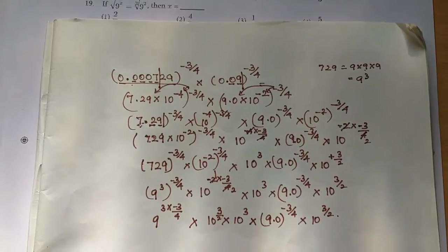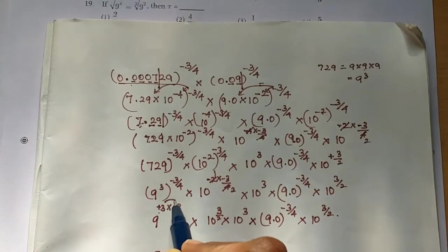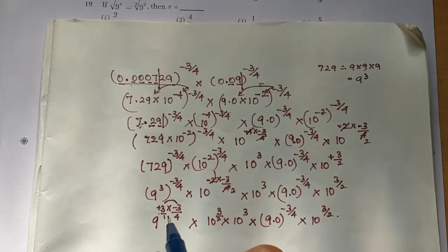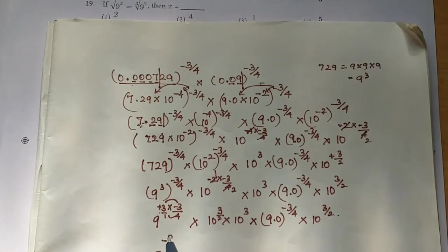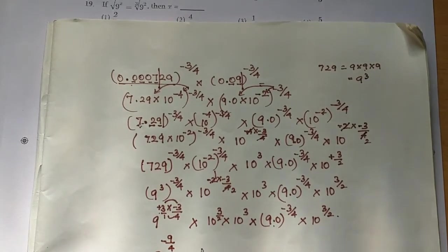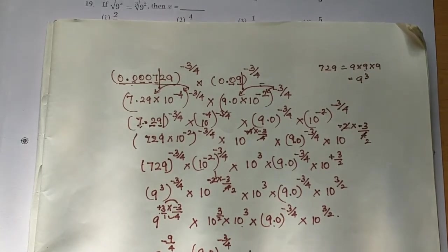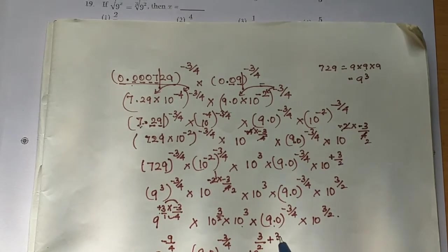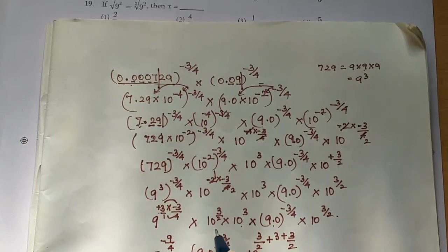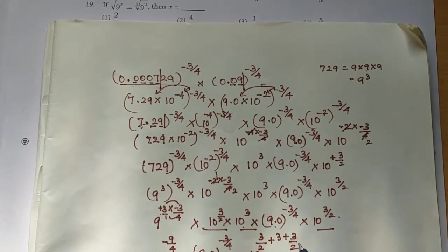So if you look at 9 power — this is multiplication, numerator into numerator. By 1 is there, denominator into denominator, so minus 9 by 4 is there, into 9.0 the whole power minus 3 by 4. Base 10 is there, so 10 is common — base is the same so the powers are added. So here are 3 tens, so 3 by 2 plus 3 plus 3 by 2.